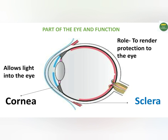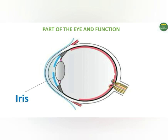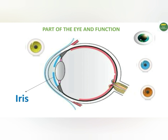The next structure is the iris. The iris is located beneath the cornea and is the area of the eye that contains pigment, which gives the eye its color. We have different varieties of eye colors as a result of the iris. The iris has the ability to control the size of the pupil, thereby regulating the amount of light that enters the eye.